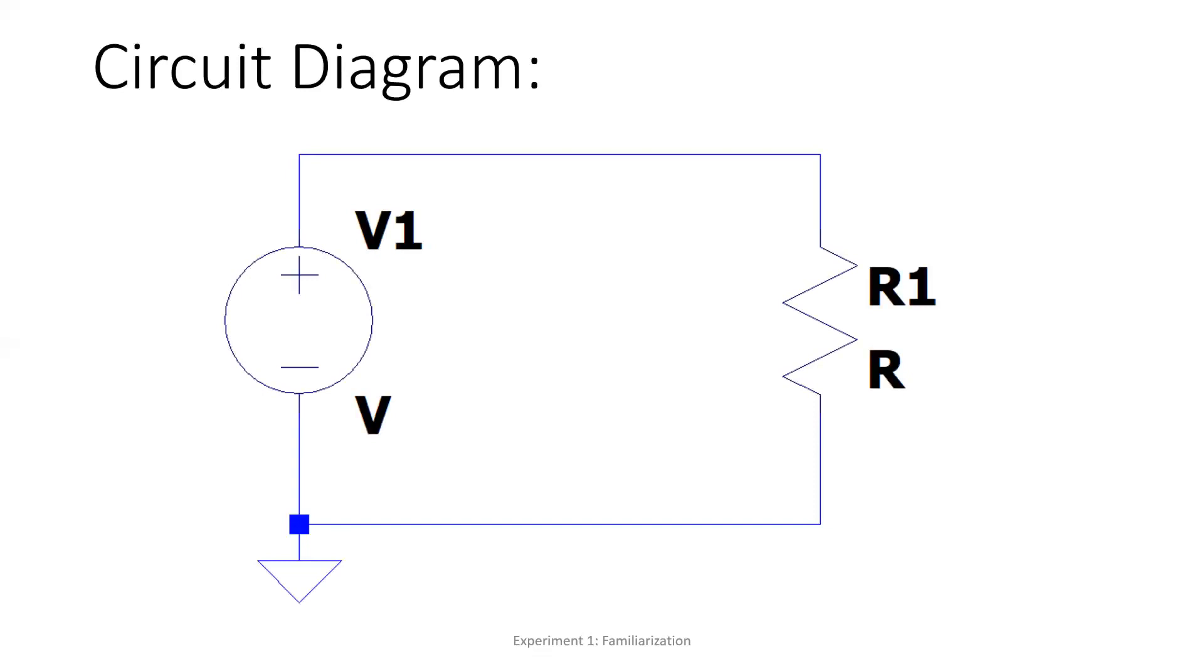So in your experiment, for the first experiment regarding familiarization, function, so this is the circuit diagram. This is the basic diagram. So we only have one resistor and one DC source. Don't forget to draw this one. Don't forget to draw ground. So what you need to do is measure the voltage across the resistor and also the current that passes through the resistor.